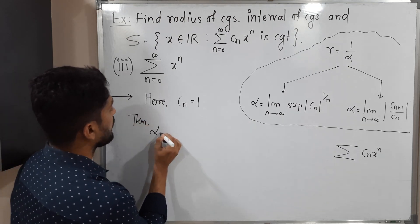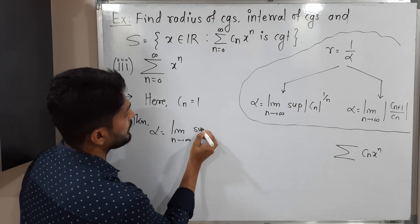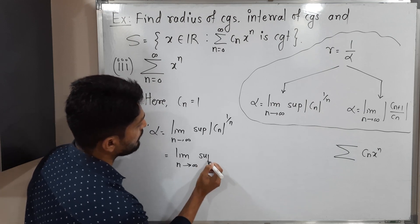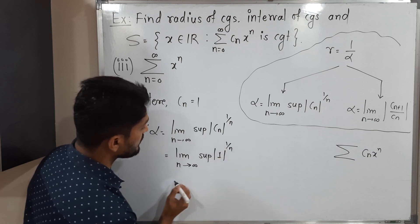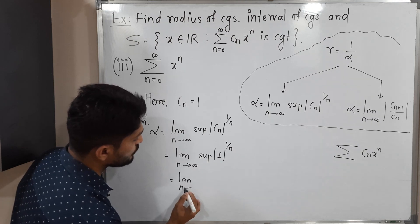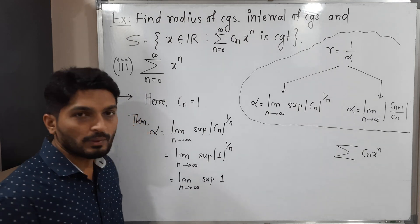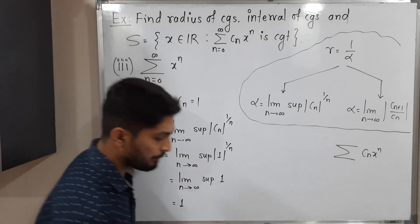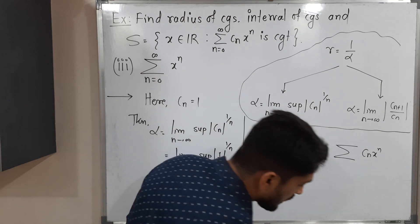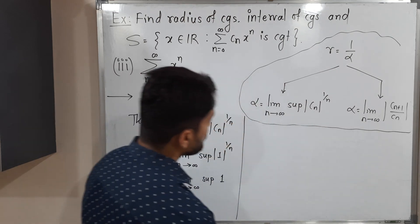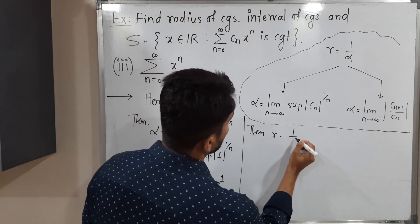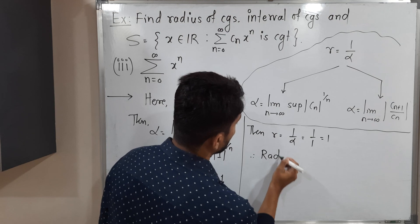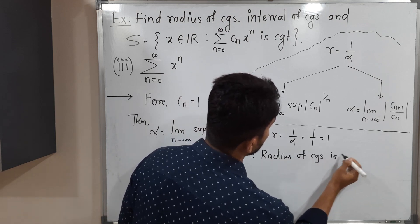Using the first formula, alpha equals limit n tends to infinity supremum of mod Cn raised to 1/n. What is Cn? It is 1. So 1 raised to 1/n is 1 itself. The limit n tends to infinity of the supremum of 1 — since 1 is a constant, applying the limit also gives 1. So the value of alpha is 1. Then R equals 1 by alpha equals 1 by 1, which is 1. Therefore the radius of convergence is 1.